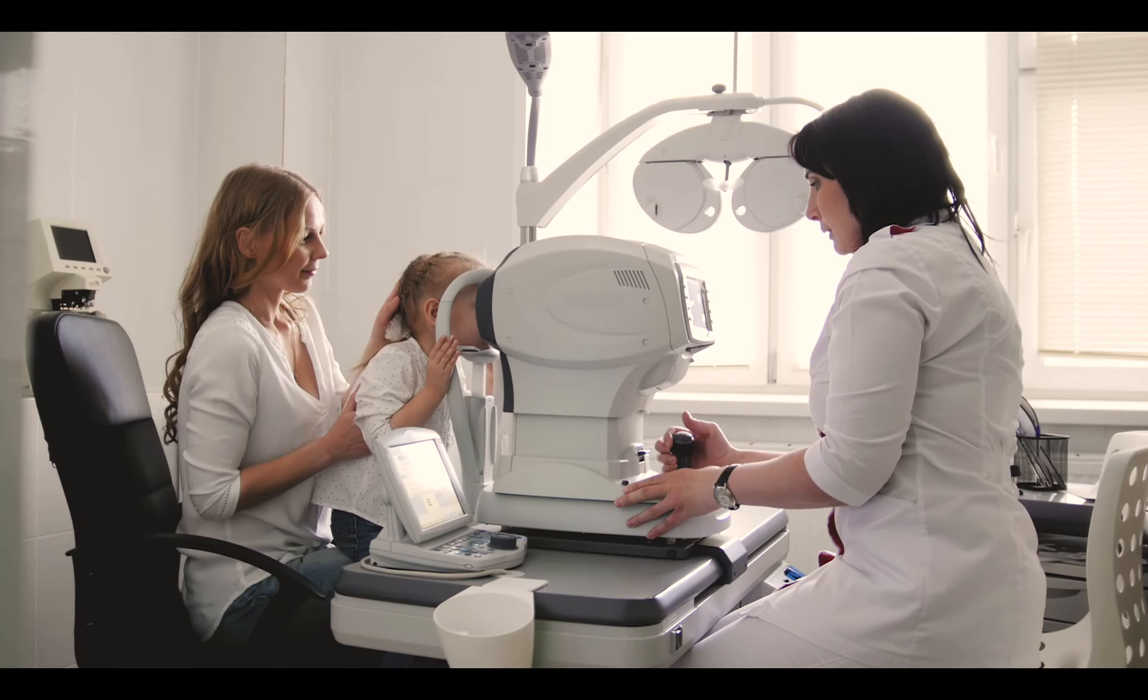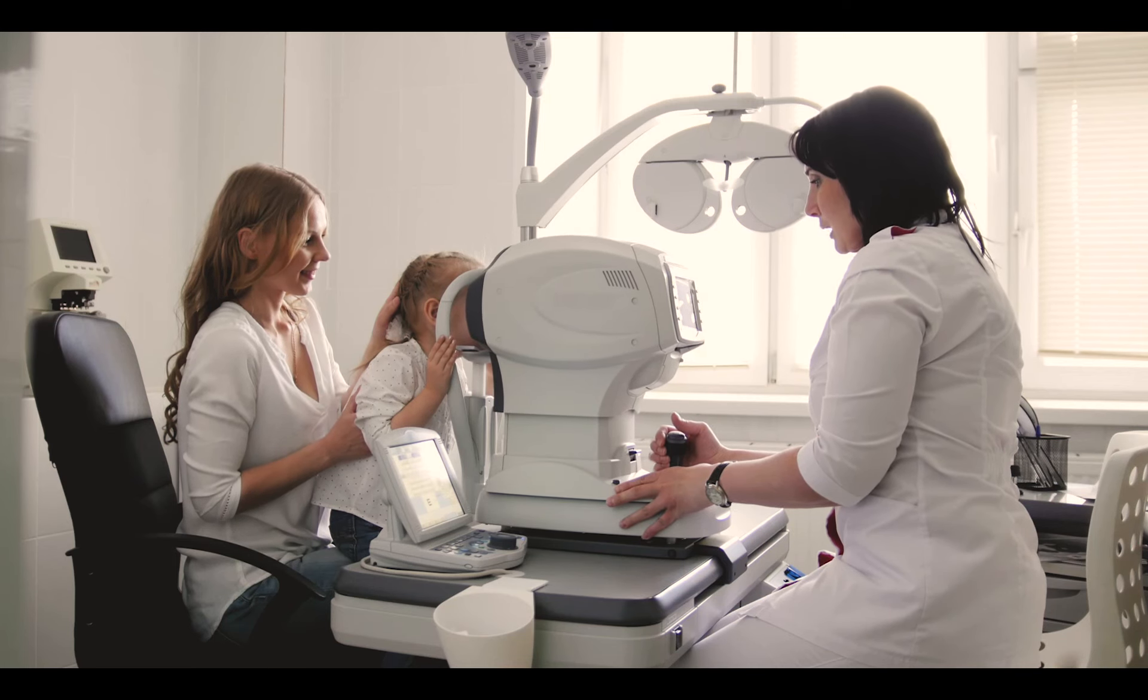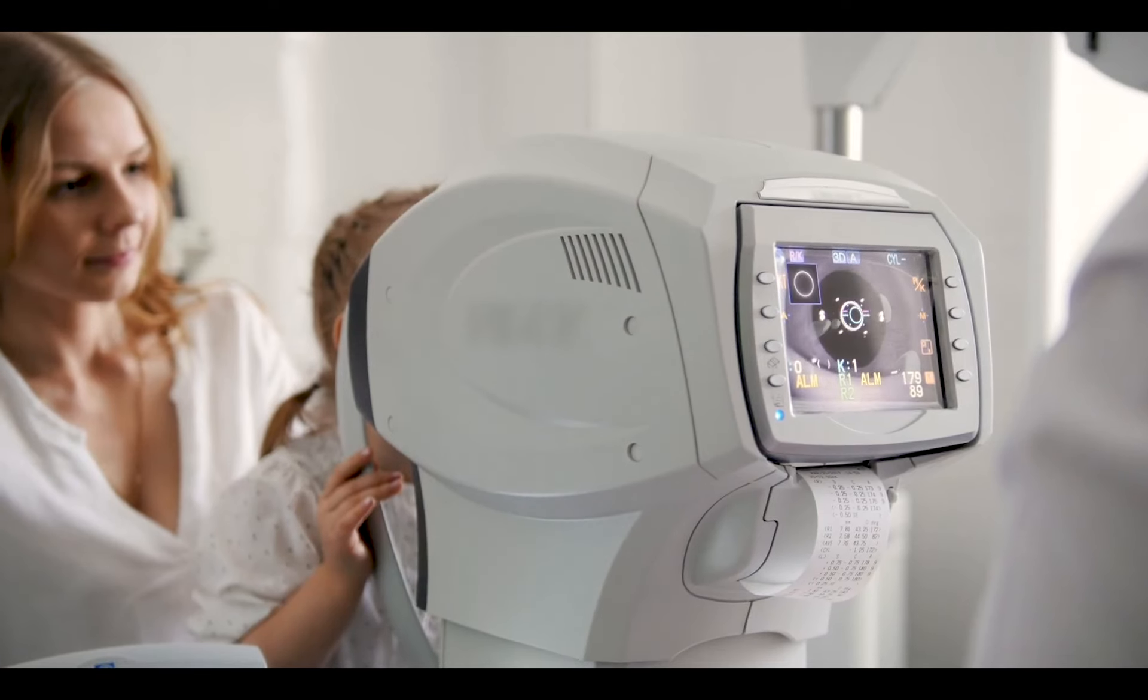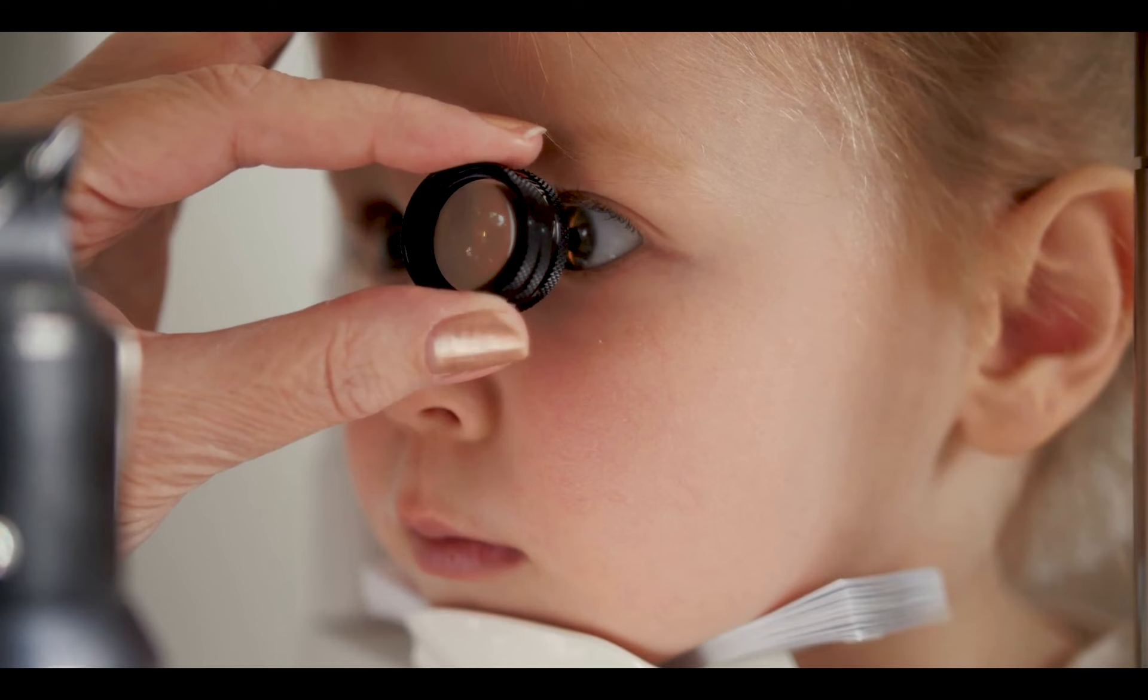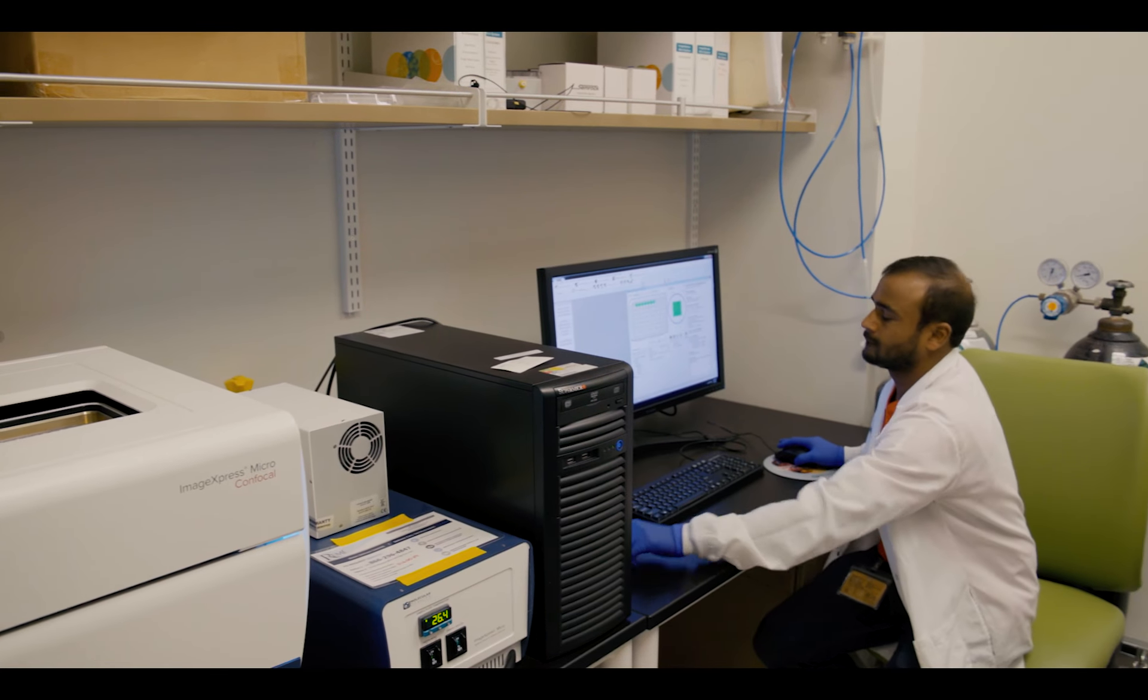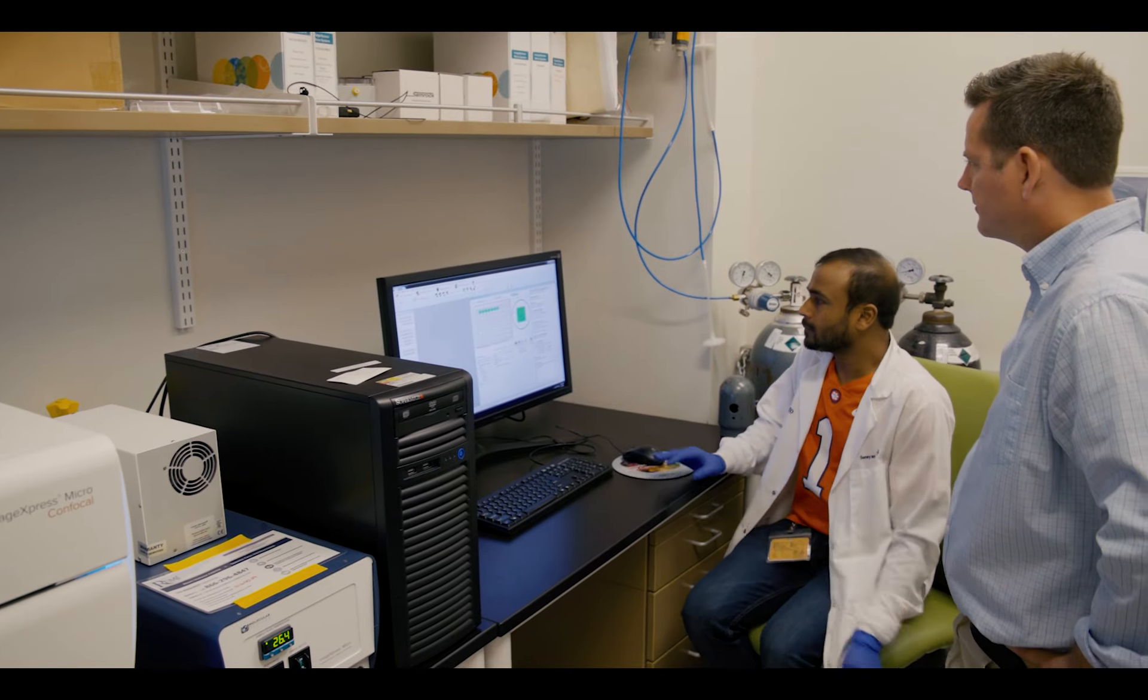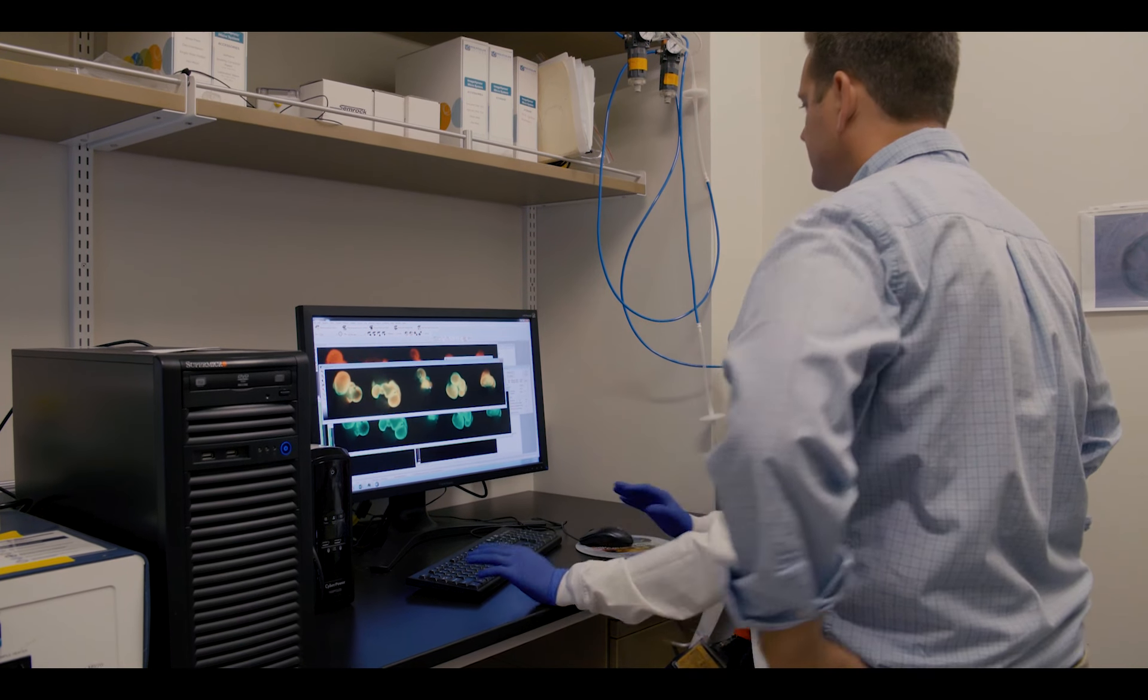There are diseases such as Leber congenital amaurosis in which photoreceptors die at a very early stage. So this is childhood onset. It's not clear what happens to the brain connections once those photoreceptors are lost at a very early stage. So if we're able to cure blindness, this is going to require knowledge of photoreceptor protection, as well as to understand how those connections in the brain could potentially be perturbed.